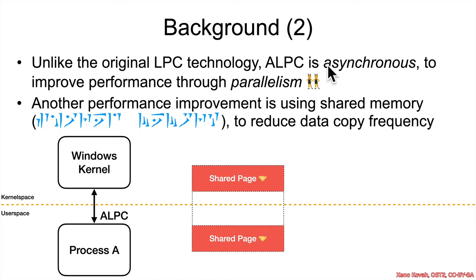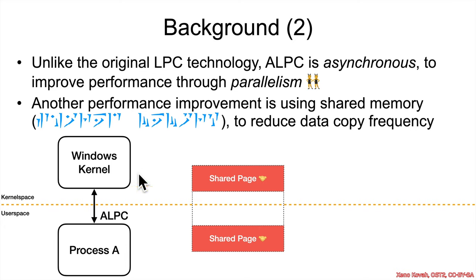Unlike the original LPC technology, ALPC is asynchronous to improve performance through parallelism. Another performance improvement is using shared memory — a shared resource — to reduce the data copy frequency. We're going to look at an example of communications via ALPC from user space to kernel space, where a specific option can be set to use a shared page of memory.